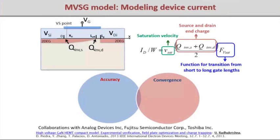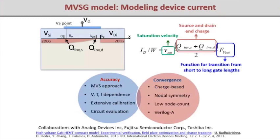The current in the MVSG model is a charge-based formulation, useful because it captures the trade-off between accuracy and convergence. The MVS approach captures voltage, temperature, and frequency dependence using a charge-based formalism. Symmetric charge-based formalism ensures no discontinuous behavior, minimizes node count, and favors implementation in Verilog-A. The model has been extensively calibrated against a variety of device technologies and verified in MMIC circuit applications against measured GaN data.